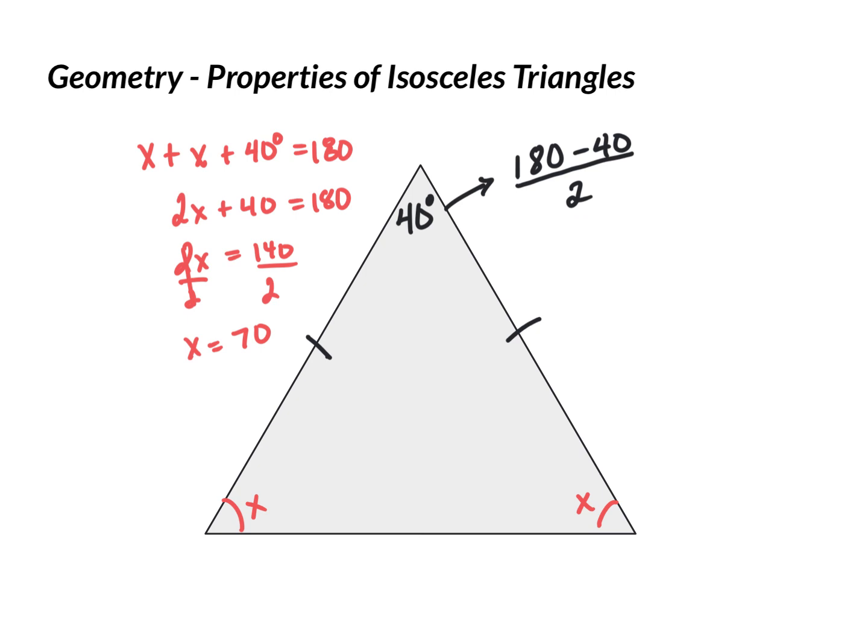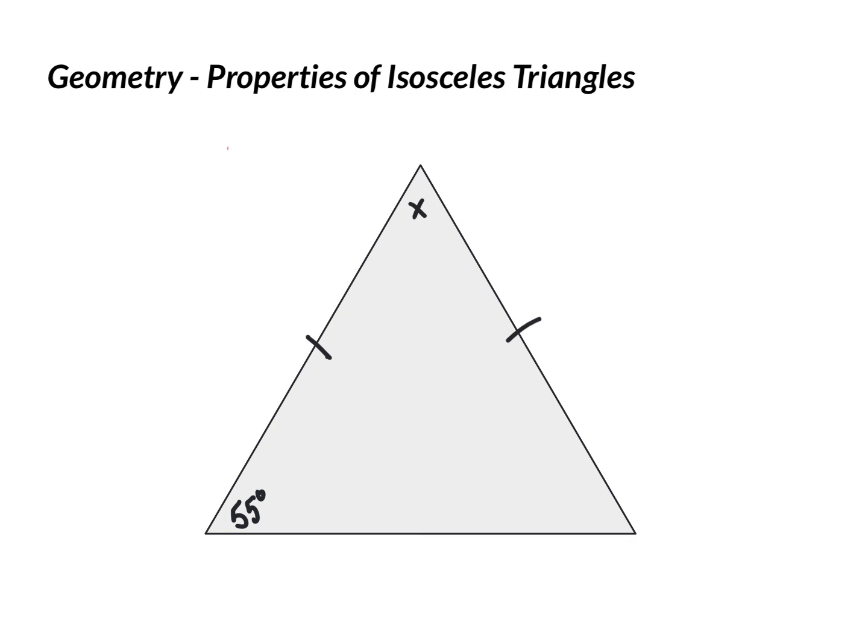Let's do another. Let's say we were given this information. We were given this angle and told to solve for the missing. Well, using our properties of isosceles triangles, if this one is 55, then so is this one.